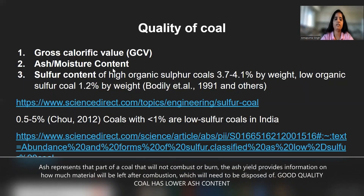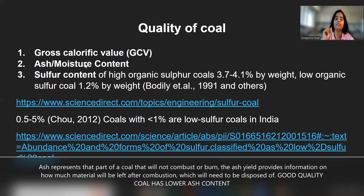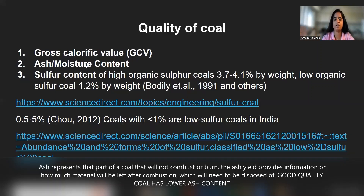Ash content is also an indicator of the quality of coal. Higher moisture content means lower quality of coal, because coal with high moisture content will not yield a lot of heat — it will have a low calorific value. So higher the moisture content, lower the calorific value of coal and lower is the quality of coal.